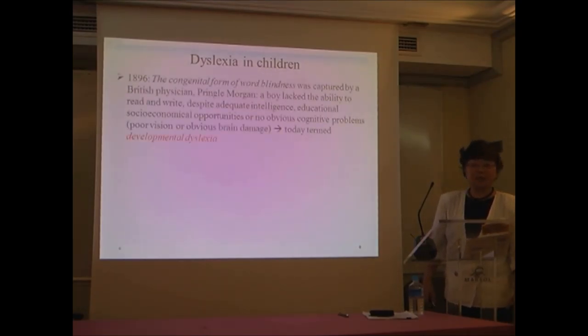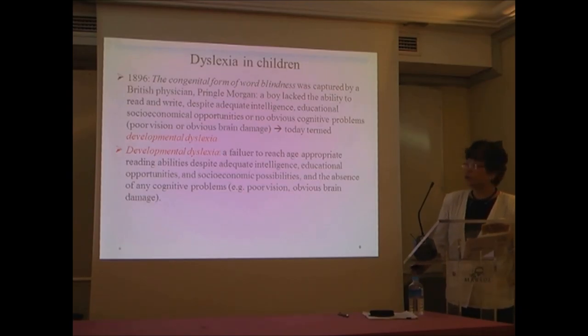Now, that much was dyslexia with adults. What about dyslexia in children? In 1896, the congenital form of word blindness was captured by British physician Pringle Morgan. He observed about a boy who was believed to read and write, but he had all other cognitive abilities intact. He had good intelligence, educational, socio-economical opportunities, and he had no obvious cognitive problems, such as poor vision or obvious brain damage. And this is today the developmental dyslexia, and this is what my research is concerned.